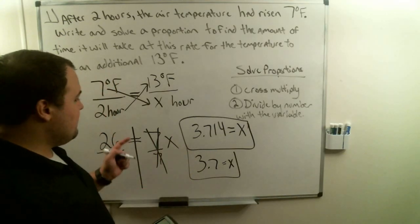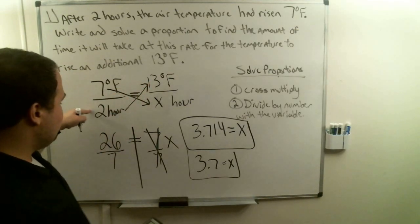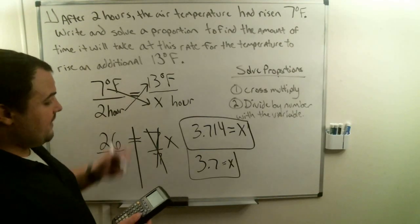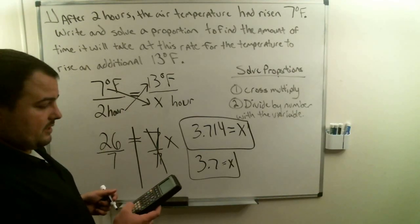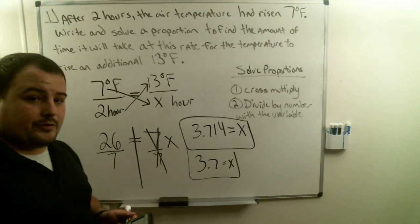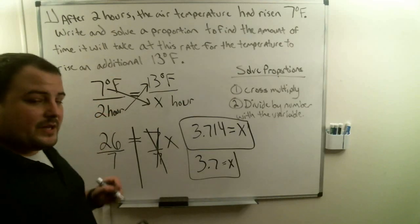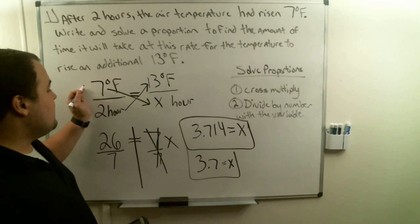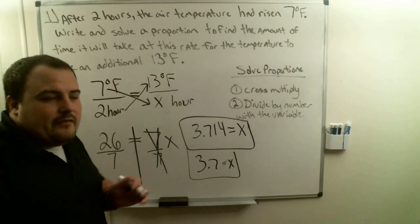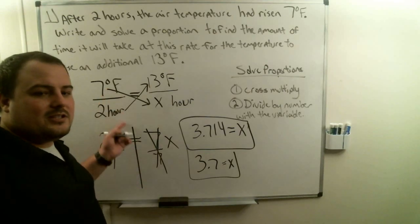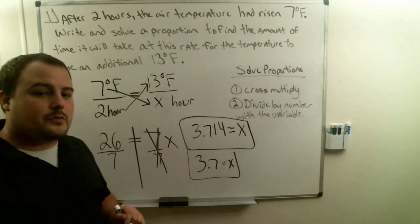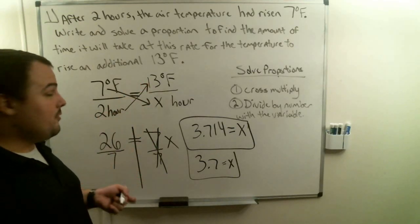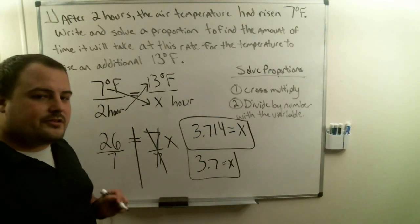Now we can check this answer and see if it's correct. If I take 7 divided by 2, I get 3.5. If I take 13 divided by 3.7, I get 3.5 as well. When we take the top divided by the bottom, we get around the same decimal — and that's important, because in order to say that these two fractions are equal, we've got to have a proportional relationship. We learned in the past that if we just take the numerator divided by the denominator, our decimals should be the same. So 13 divided by 3.7 is 3.5, and 7 divided by 2 is also 3.5.